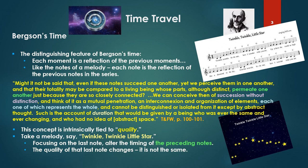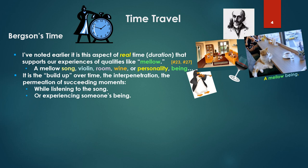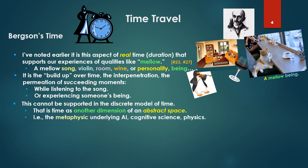This concept is intrinsically linked to quality. This notion of each note reflecting the whole. Take a melody like Twinkle Twinkle Little Star. If I focus on the last note of the melody and alter the timing of the preceding notes, the quality of that last note changes. In fact, the procession of the whole changes. It's simply not the same. It is this aspect of real time, concrete time, or Bergson's duration, that supports our experiences of qualities like mellow, or feelings, a mellow song, violin, room, wine, personality, or being, like our cat.